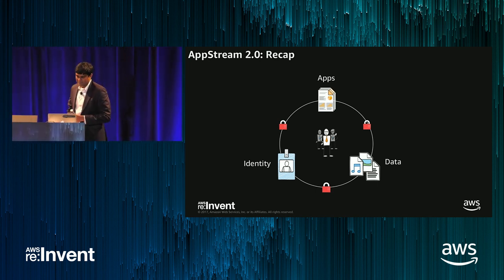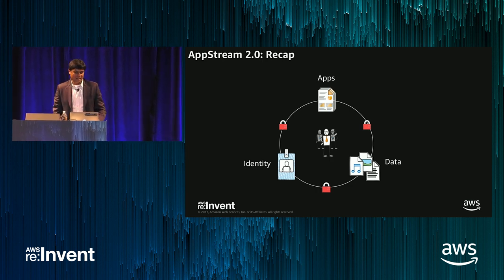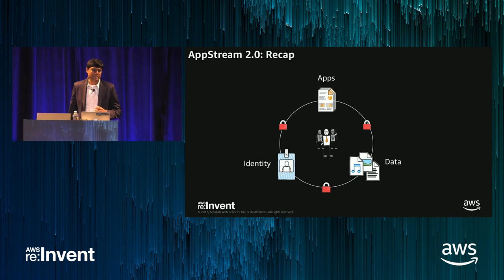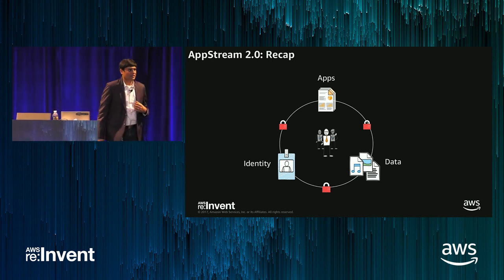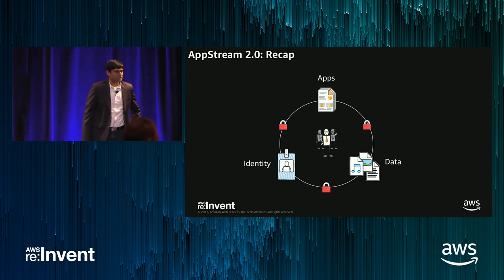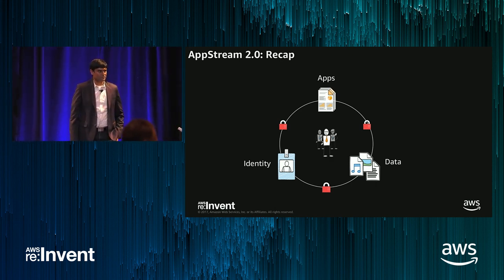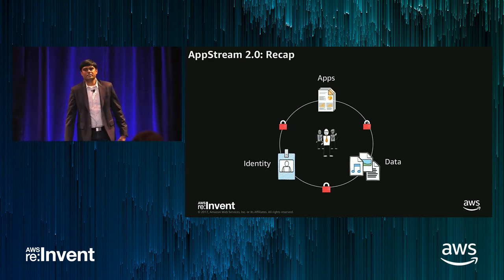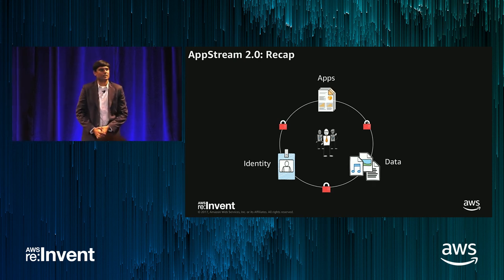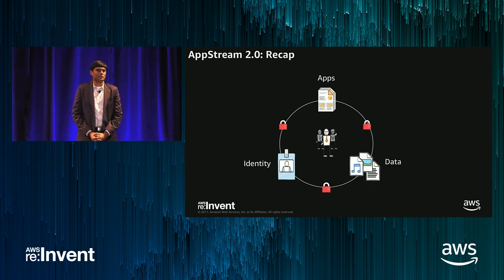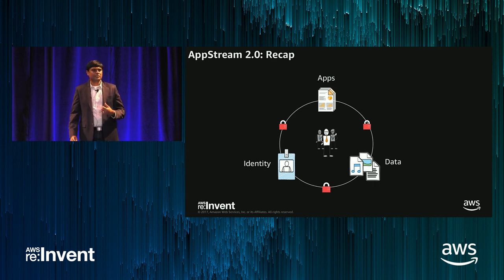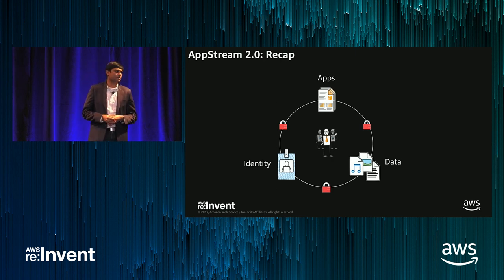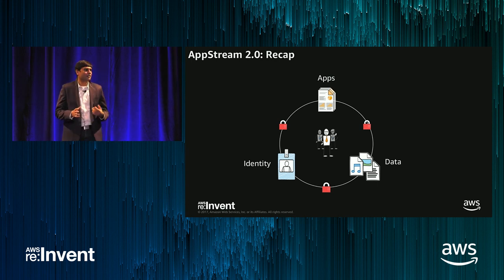I have a couple of minutes — happy to take questions. What happens if a user loses connectivity, say your Wi-Fi drops or you're going between conference rooms? The session is still continuing — you don't actually exit the session unless you say you want to exit, or it runs out of a timer. As an admin, you can set a timer for how much time a session is active if there's no activity, and then the instance automatically disconnects.